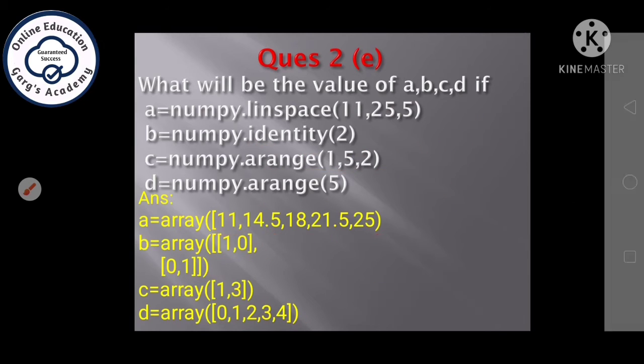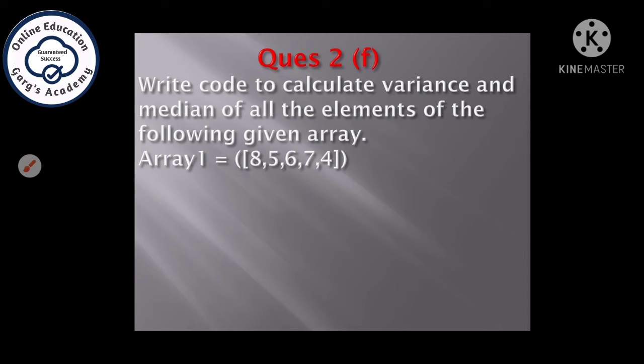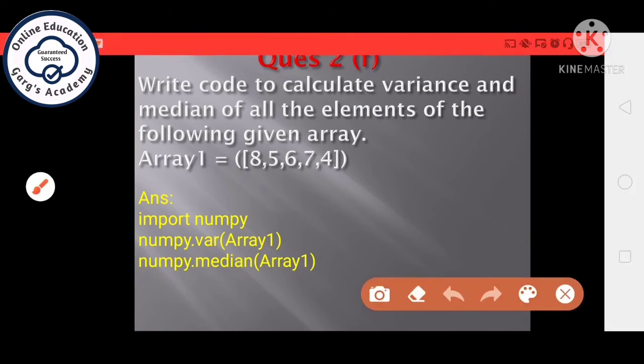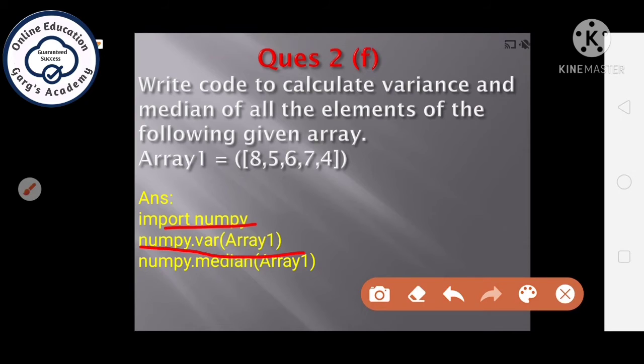Next question, write code to calculate variance and median of all the elements of following given array. Now, for variance function, we will use var function and for finding out the median, we will use the median function of numpy module. So, first we will import the numpy module and then we will write numpy dot var variance function and in the arguments, we will give the array name. Next, numpy dot median array 1.